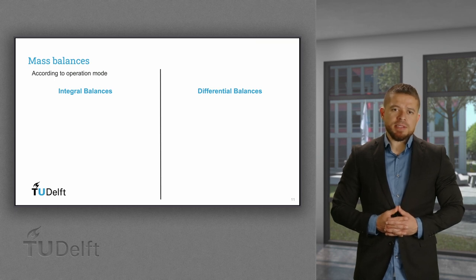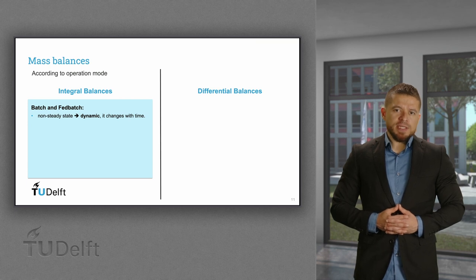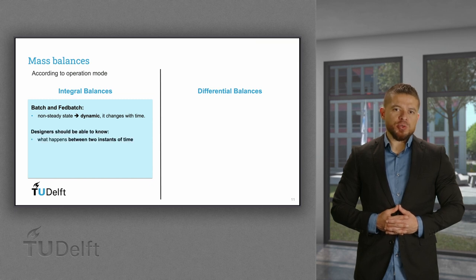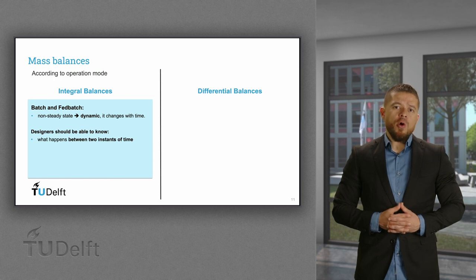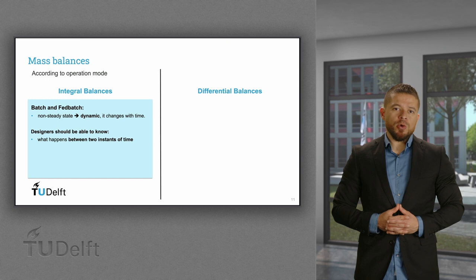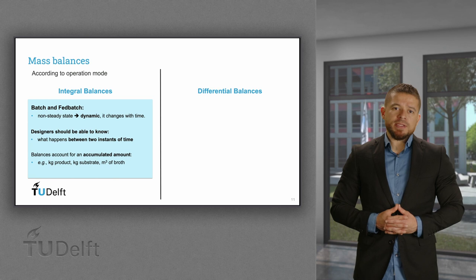The different operation modes lead to different types of mass balances: integral balances and differential balances. Integral balances are for non-steady-state processes and they capture the dynamic behavior of the system. Designers should be able to know what happens between two instances of time — for example, how much product is produced from start to end, how much substrate is needed in total, or what the reaction volume is at the end of the process. These balances account for an accumulated amount between two instances of time.